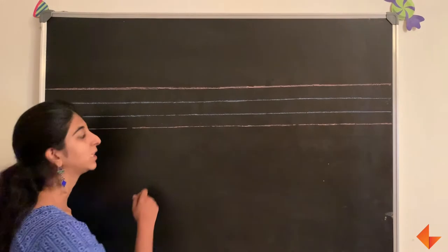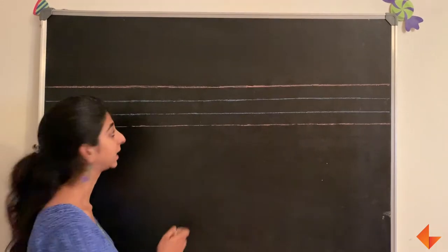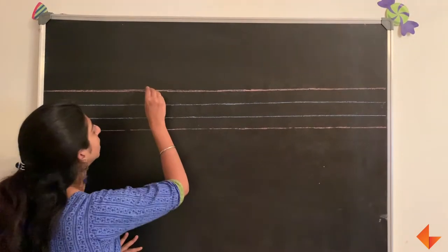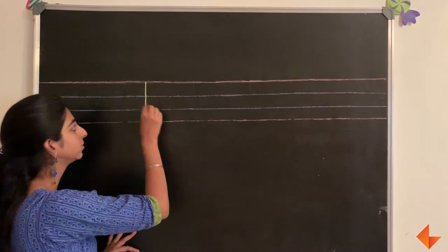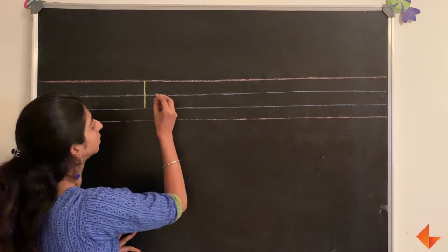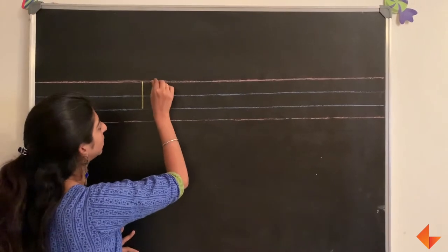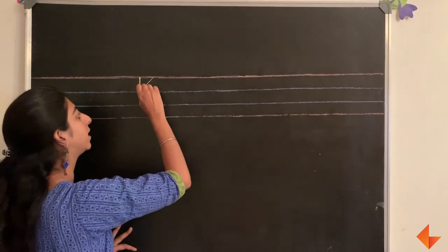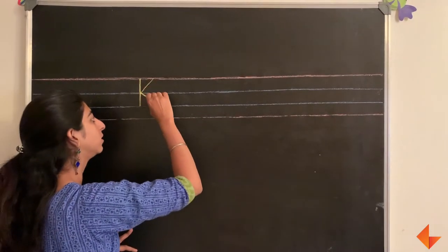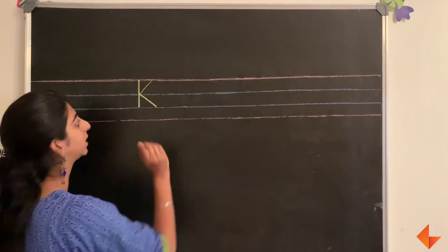This is how you write the letter K. Draw a standing line, a slanting line, and another small slanting line.